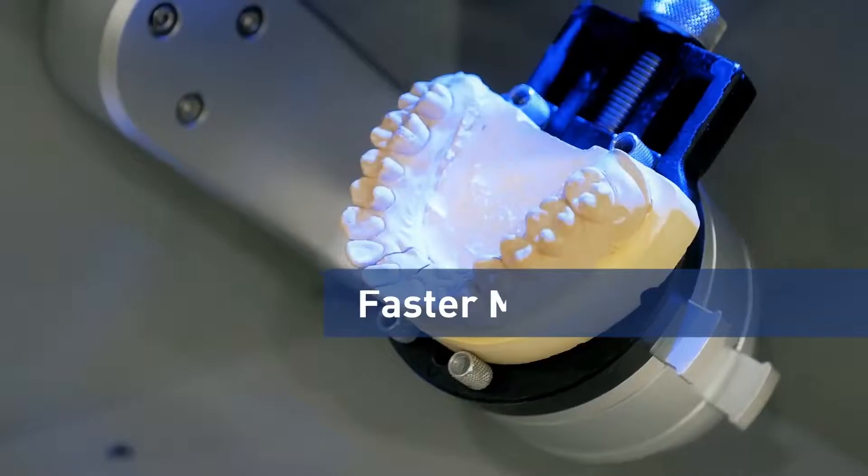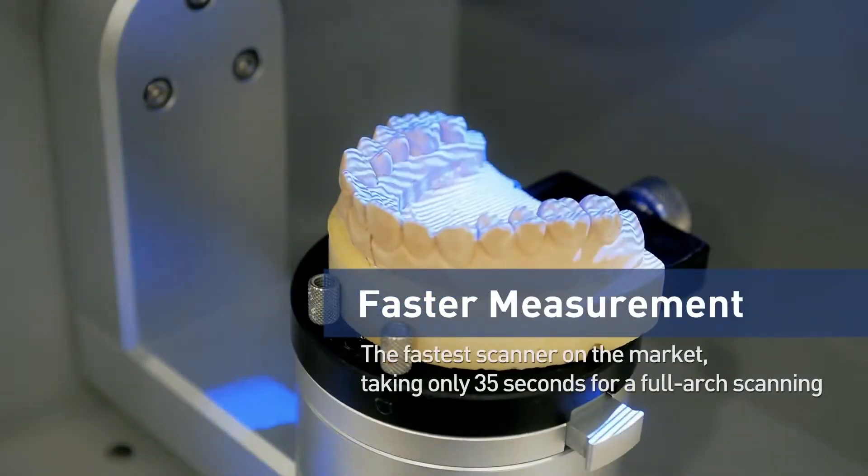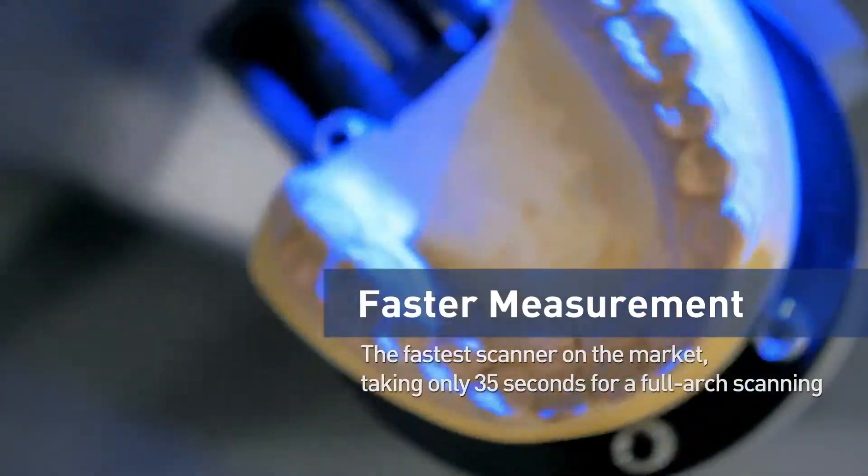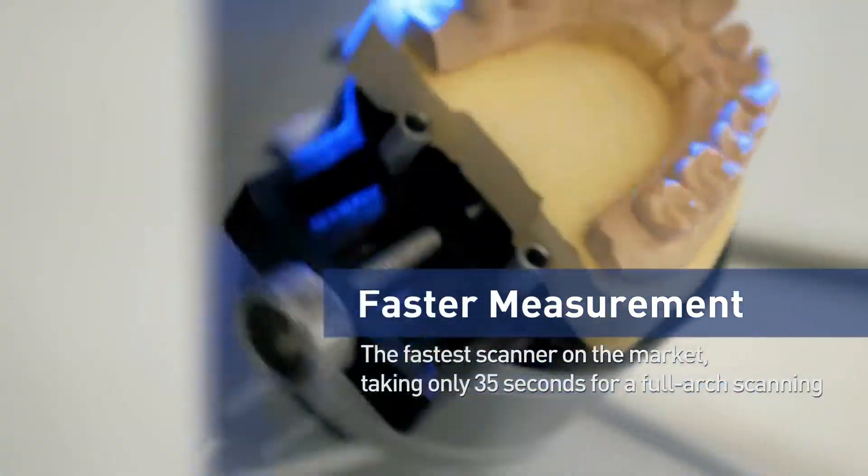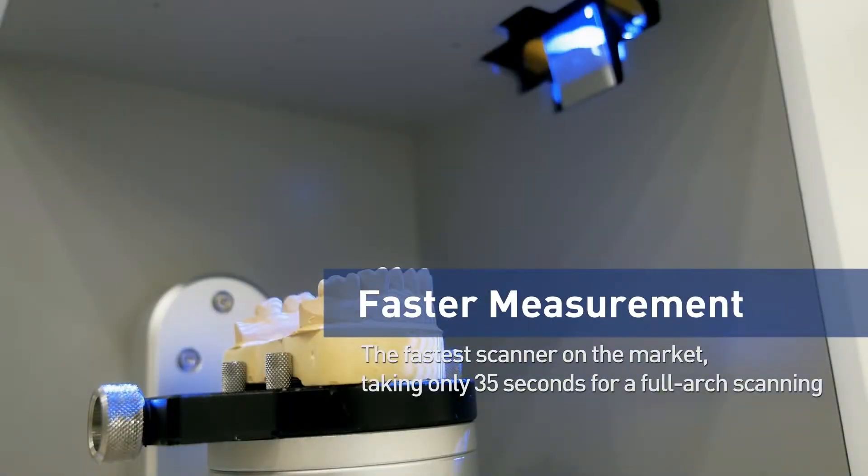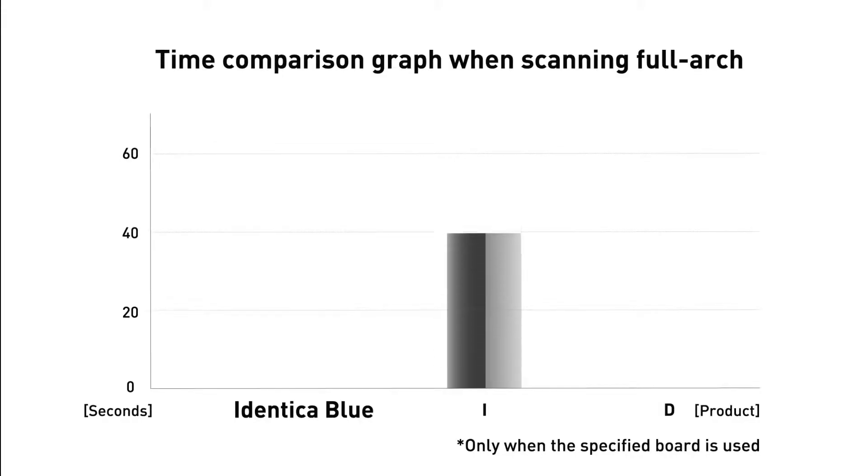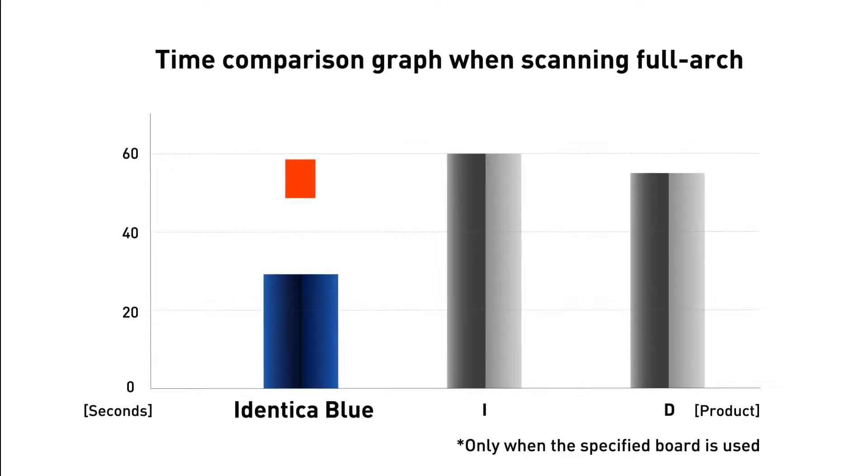Identica Blue 2015 is the fastest scanner in its market today. With the patented automatic scanning feature, scanning of a full-arch model can be accomplished in as fast as 35 seconds. It has been proven to be 30% faster and more productive than any other scanner in this market today.